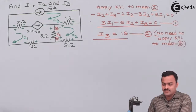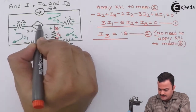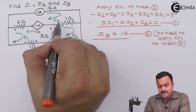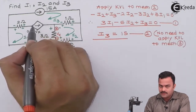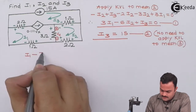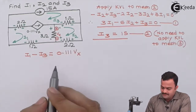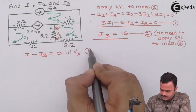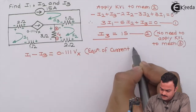We now tackle the issue of the current source between two meshes. This branch carries two currents: i1 in one direction and i3 in the other. The given current direction is left to right, which matches i1. So we can write the equation of this voltage-controlled current source as: i1 minus i3 = 0.111·Vx. This is the equation of the current source present between two meshes.